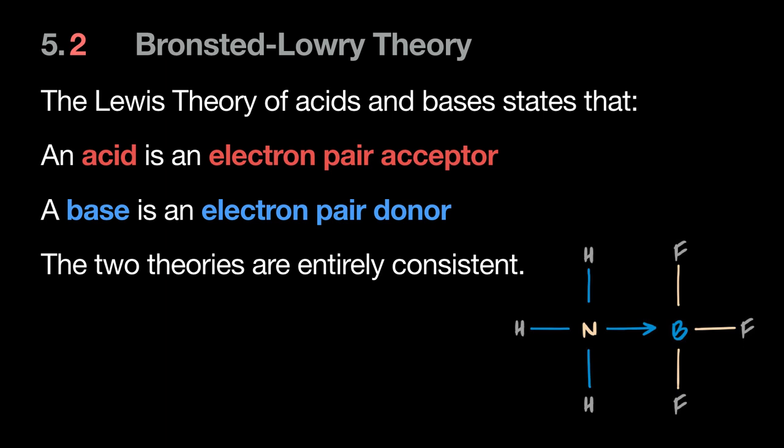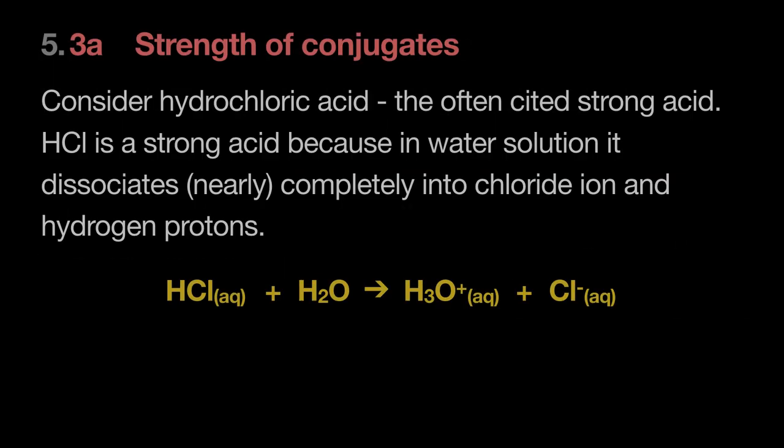After this introduction, this chapter focuses only on Arrhenius acids. Now let's move on to the strength of acids. To explain strength we also need to discuss the strength of conjugates, because we'll cover weak acids and their conjugate bases. Things like buffer solutions depend on having a mixture of both an acid and its conjugate base, so we need to understand how conjugate strength works.